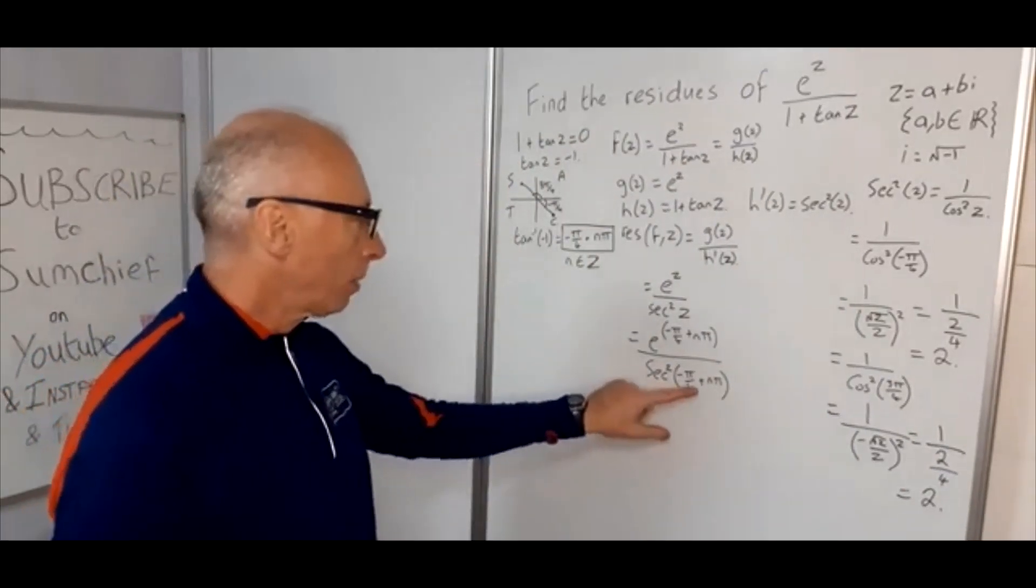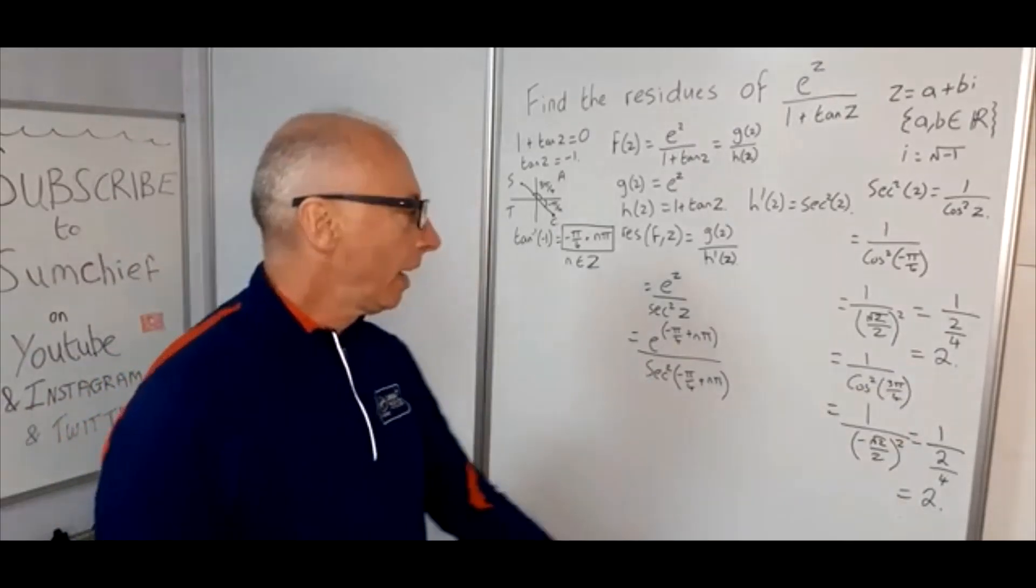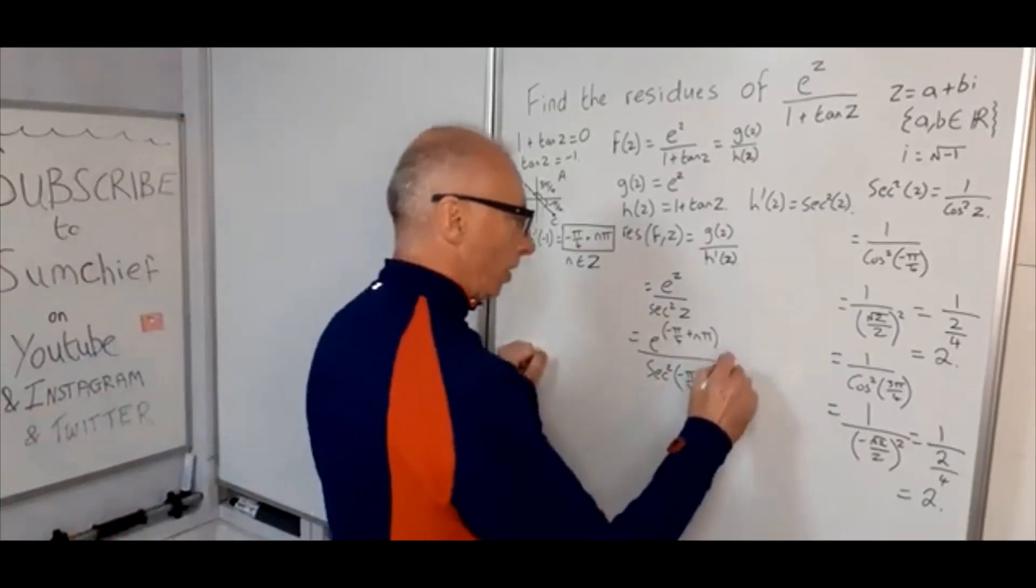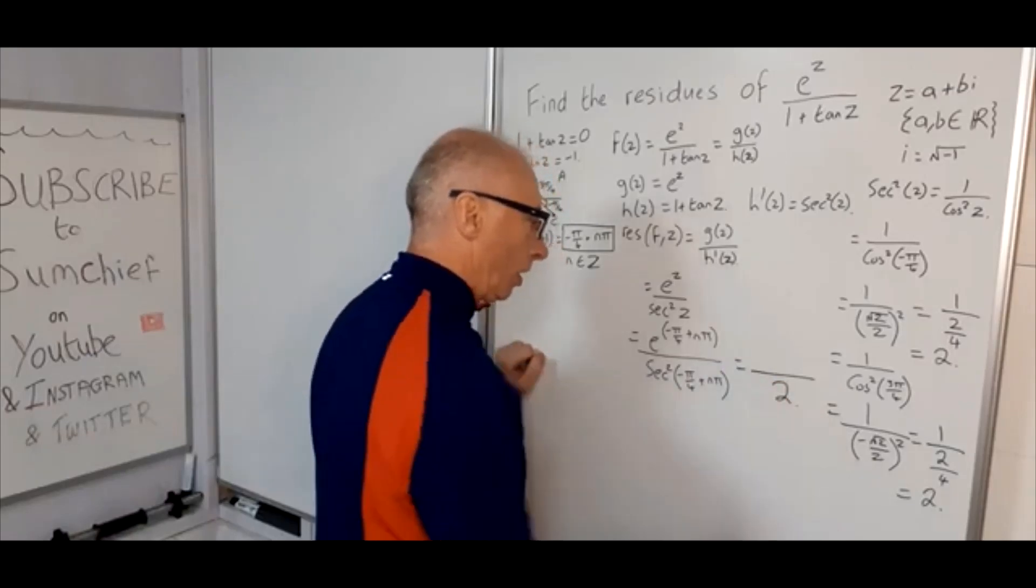So it seems sec²(-π/4 + nπ) is going to be 2 at every point. So this will always equal 2. So this is going to just yield us 2. So that's good.